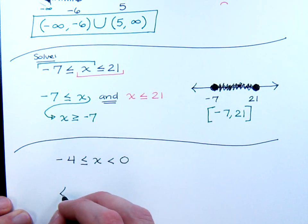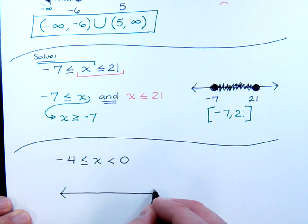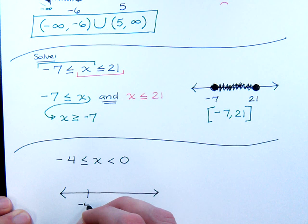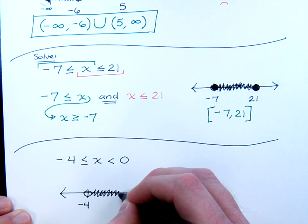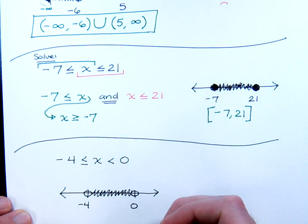If I were to graph this, here's negative four, here's zero. I know that x, which is going to be representing my solutions, will be between negative four and zero. The question remains as to what kind of circles I have here.